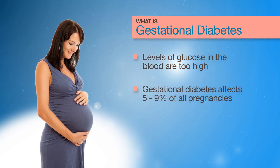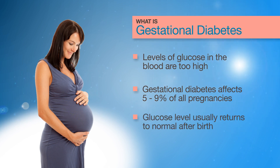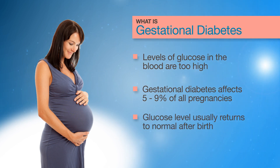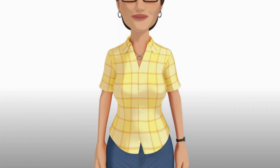In gestational diabetes, blood glucose levels in the woman are raised above the normal ranges for pregnancy. After the baby is born, the mother's blood glucose levels usually return to normal. To help us understand gestational diabetes, let's have a look at how our body usually uses carbohydrate foods and balances our blood glucose levels over the day.